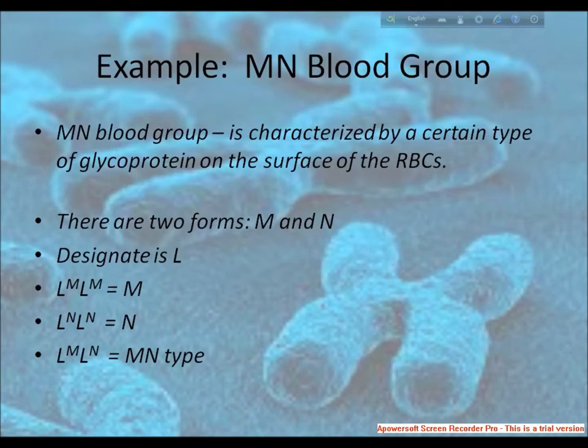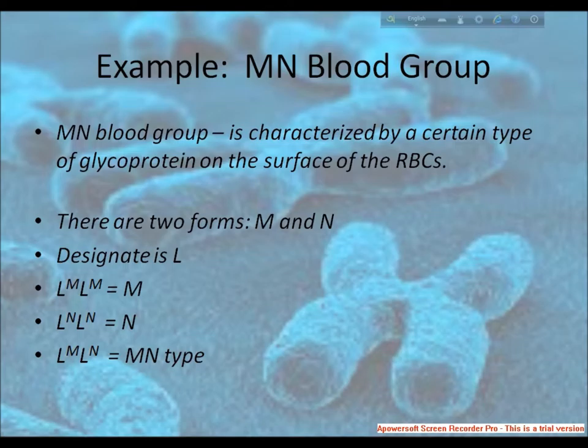As an example, the alleles governing the MN blood group in humans are examples of co-dominant alleles. The MN blood group is characterized by a certain type of glycoprotein on the surface of the RBCs. There are two forms, M and N, designated as Lm and Ln. Lm equals M type, Ln equals N type, and Lm/Ln equals MN type.